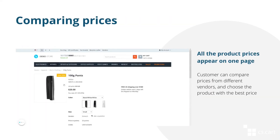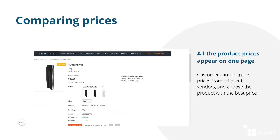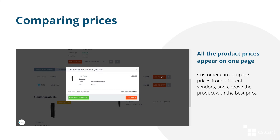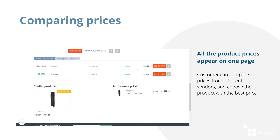When a product is sold by several vendors, it appears on the storefront with the lowest price. A customer can examine the list of vendors selling this product and choose from whom they want to buy based on the best price, or just pick the vendor they trust the most.